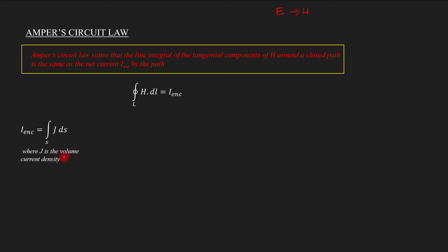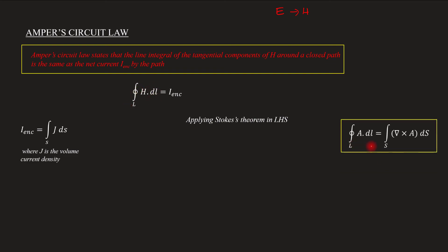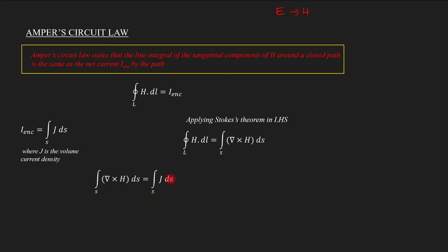I enclosed is the volume current density J. Now, I am applying Stokes' theorem to the left-hand side. Stokes' theorem allows us to write: the integral over L of H dot dL equals the integral over S of del cross H dot dS. Equating both sides gives another important expression, which is the third Maxwell's equation.